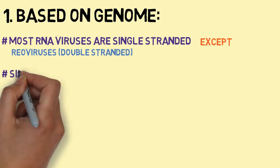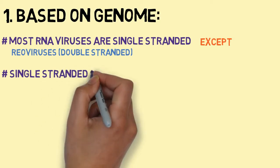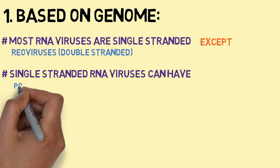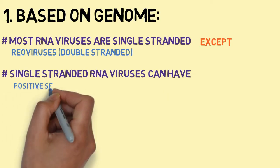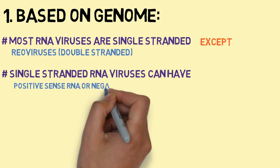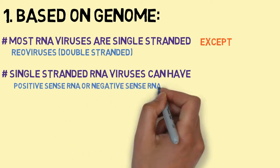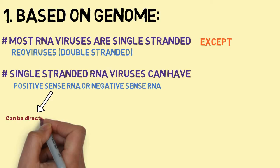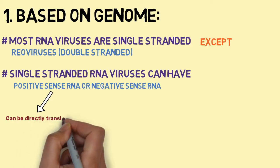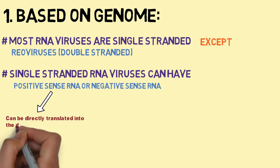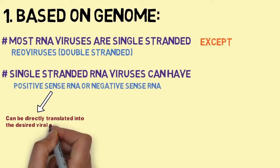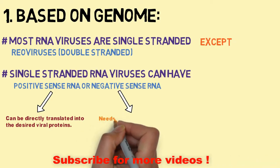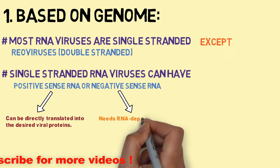Single-stranded RNA viruses can have either positive-sense RNA or negative-sense RNA. Positive-sense RNA can be directly translated into the desired viral proteins, whereas negative-sense RNA requires RNA-dependent RNA polymerase prior to translation.